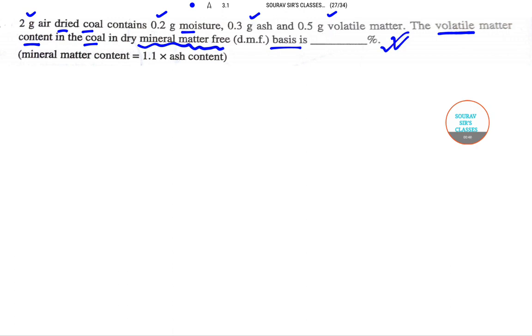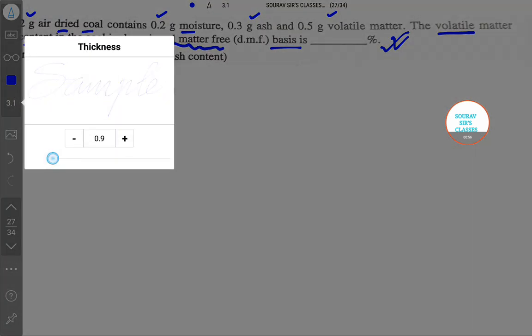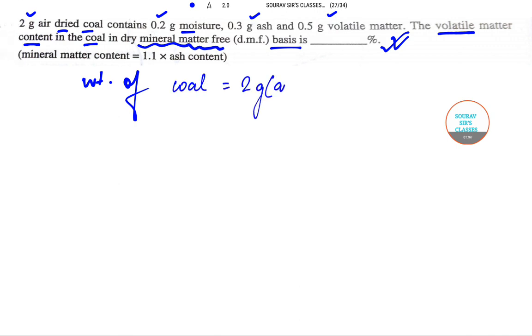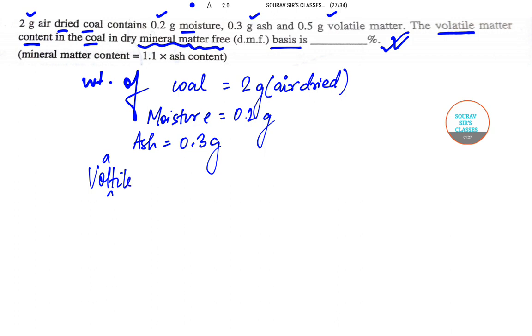Let's do it. We have been provided with weight of coal to be 2 grams, this is air dried. Then you have moisture which is 0.2 gram, then ash which is 0.3, and volatile matter is 0.53. So we need to calculate the volatile matter in coal in dry matter free and that too in percentage.